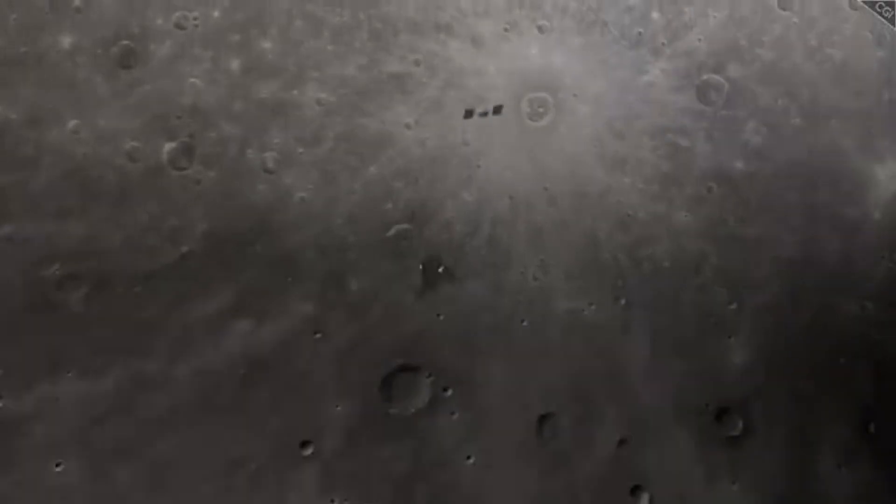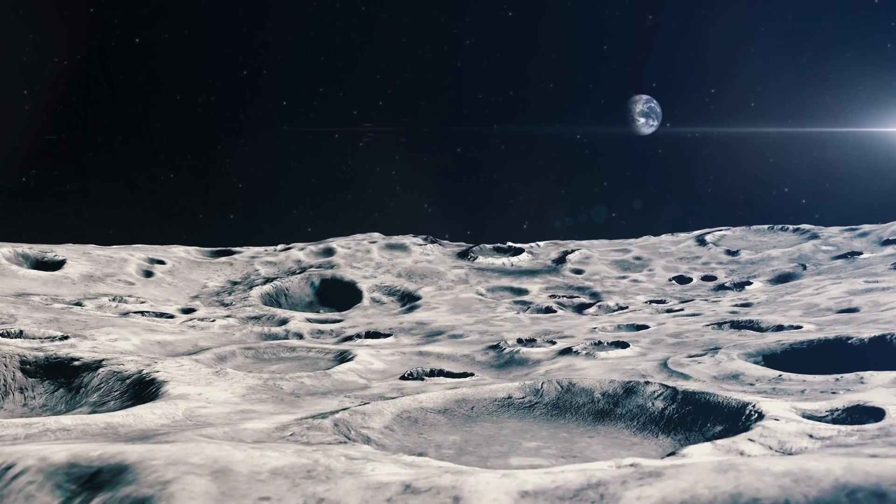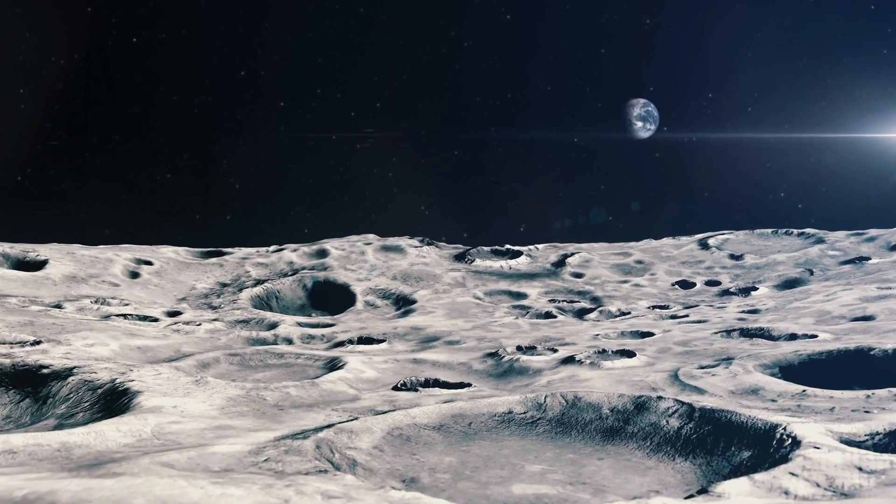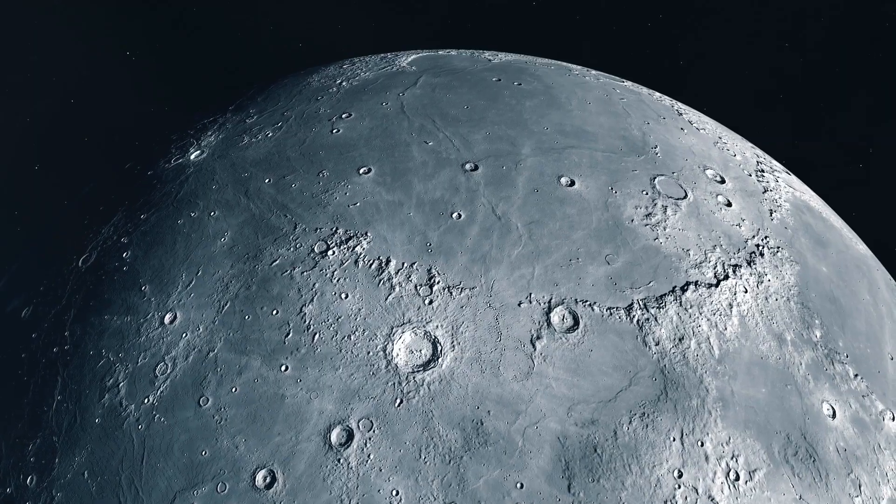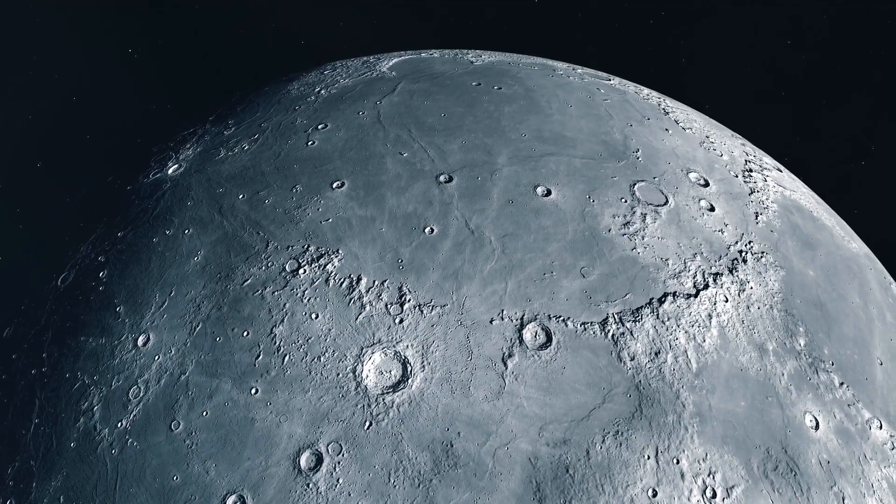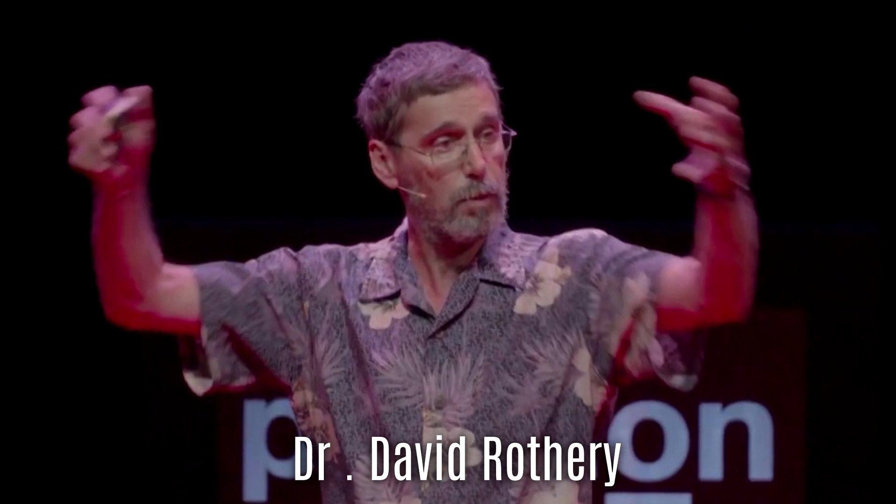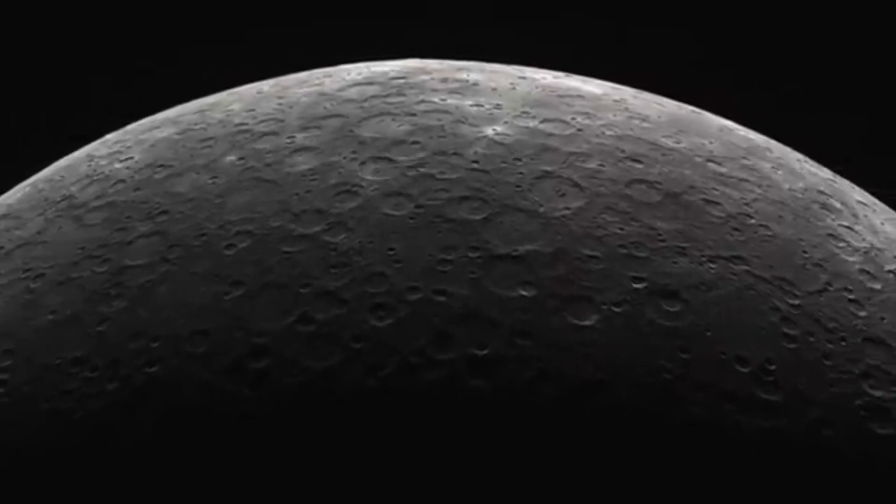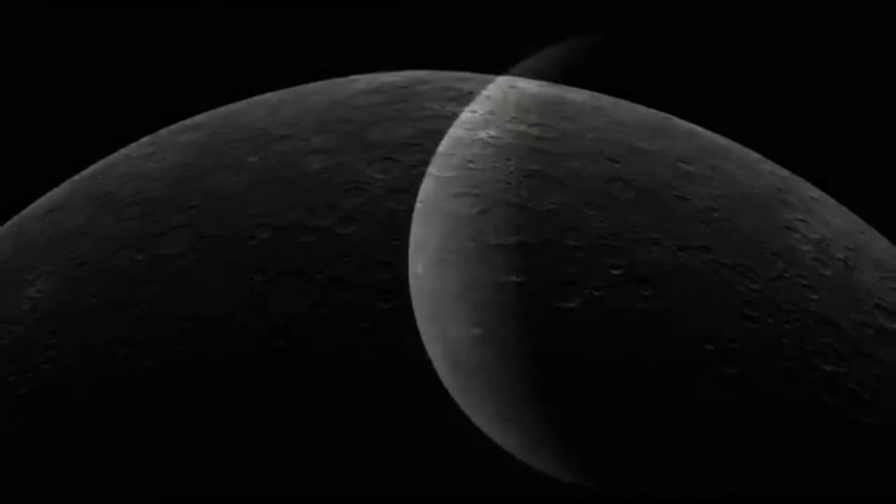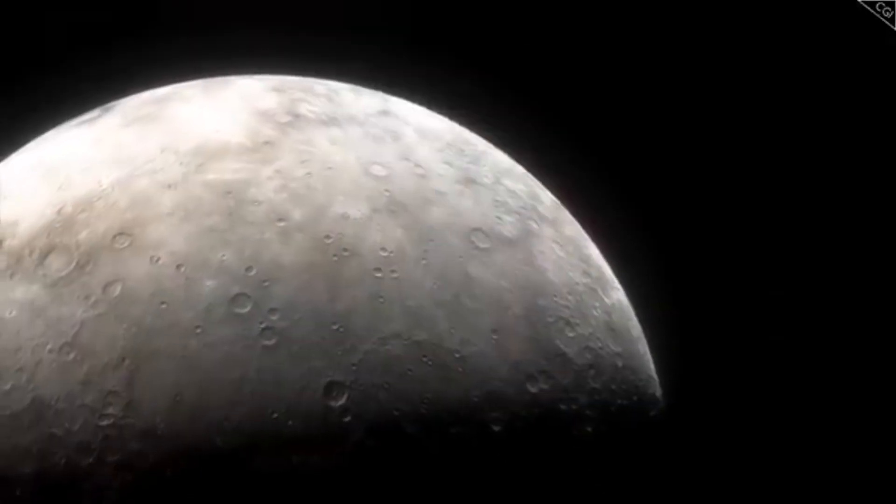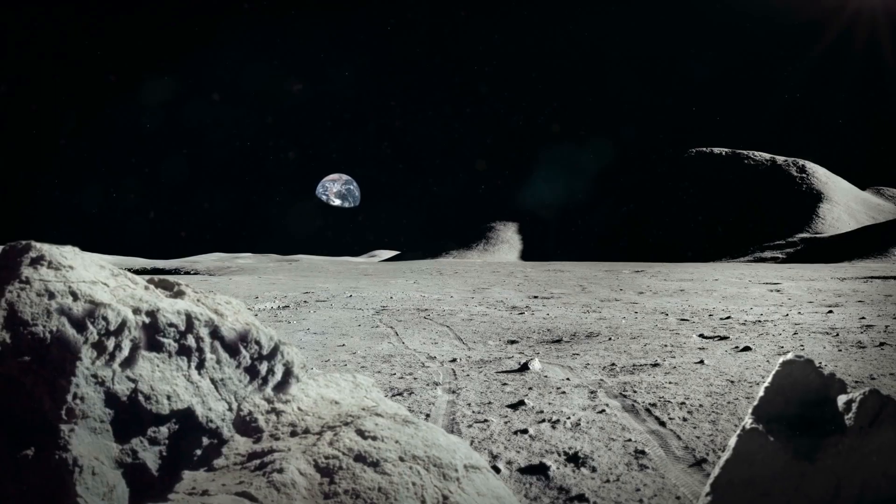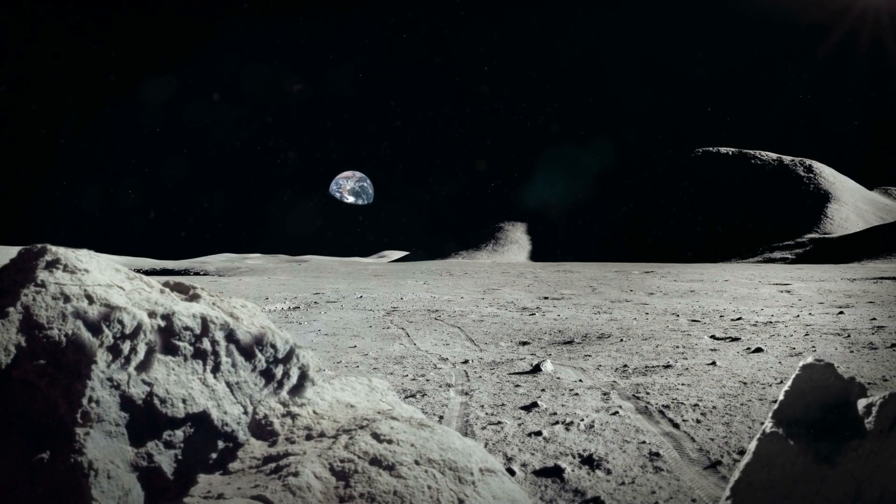Another significant revelation about Mercury is its geological activity. For many years, scientists believed Mercury to be a geologically dead planet, but data from the Messenger mission indicated evidence of recent volcanic activity. Dr. David Rothery from the Open University in the UK identified small, bright spots on Mercury's surface that resemble volcanic vents. These formations, known as hollows, suggest that Mercury may still be geologically active.